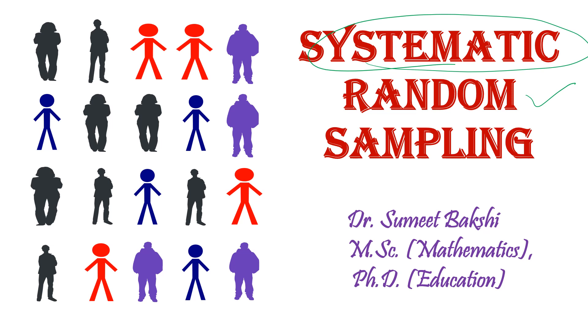In Systematic Random Sampling, we use a systematic interval to draw sample from the population. Before moving ahead, let's discuss when it is used.